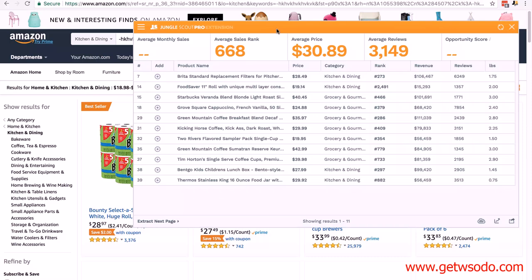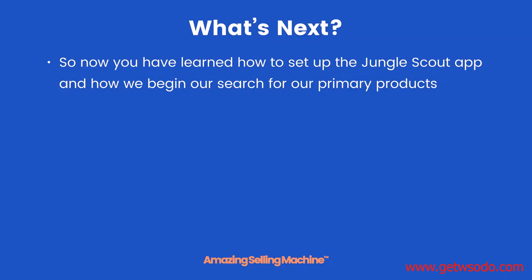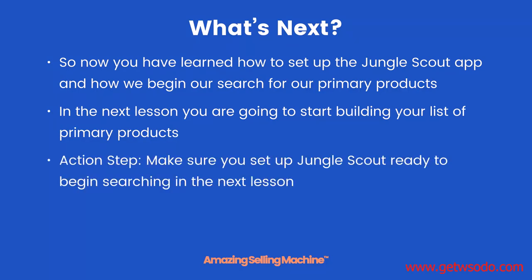That's how you set up Jungle Scout to start searching for your primary products to build your primary product list. Now you've learned how to set up the Jungle Scout app and how we begin our search for primary products. In the next lesson you'll actually start building your list of primary products. Your action step: make sure you set up Jungle Scout ready to begin searching in the next lesson. That's it for this lesson — take care.